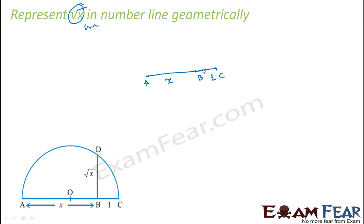And let's call this point C. Taking this whole AC as diameter, I'll draw a semicircle. Now if I draw a perpendicular from here, it will touch this point and this will become root x. This is called point BD. So BD will be root x.